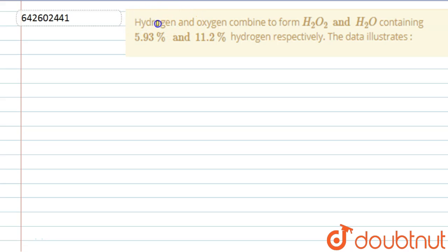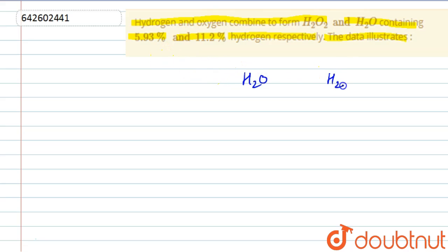In this question, we are given that hydrogen and oxygen combine to form H₂O₂ and H₂O, containing 5.93 percent and 11.2 percent hydrogen respectively. We are given the percentages of hydrogen in both compounds, and we have to determine what this data illustrates.